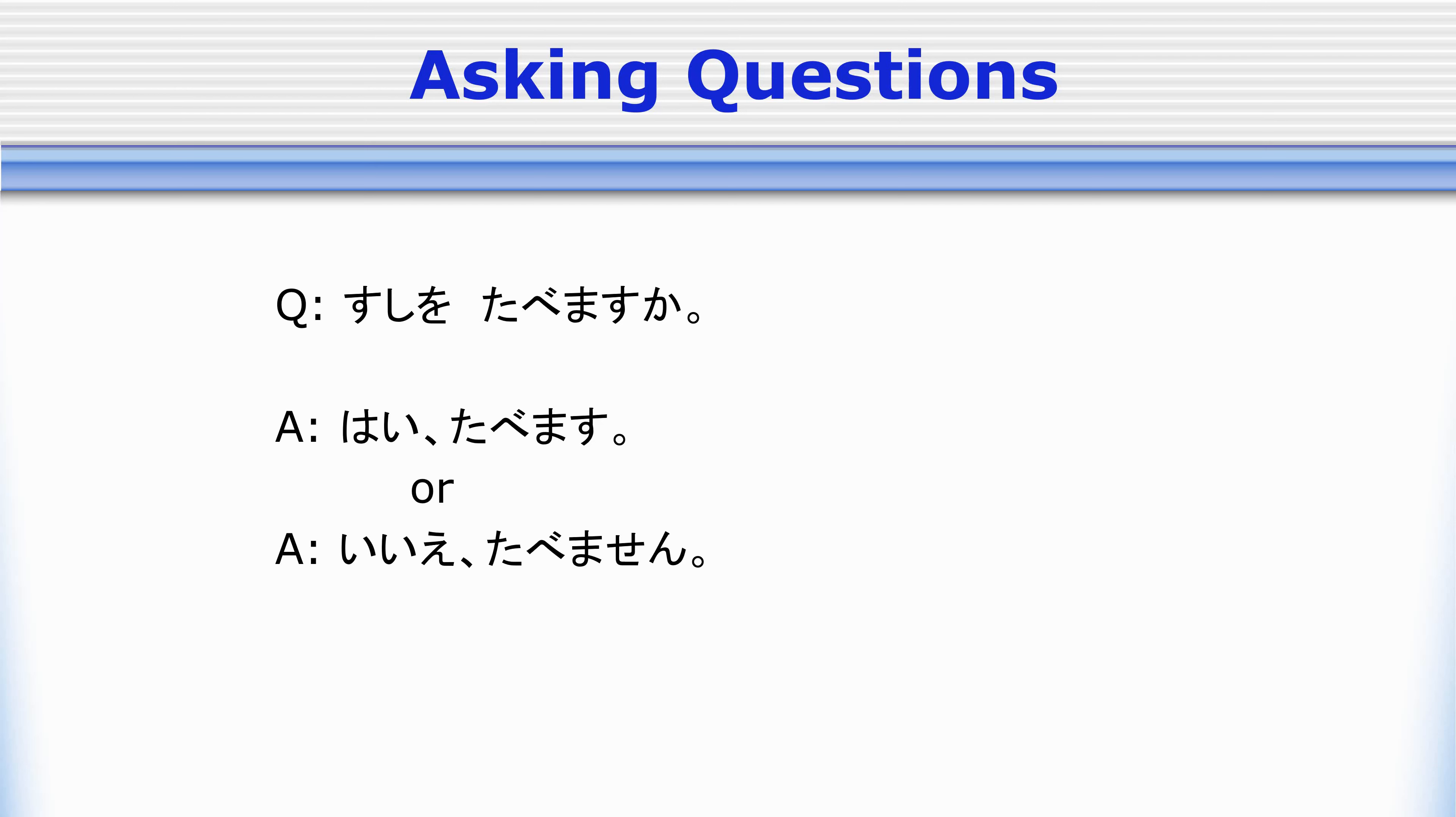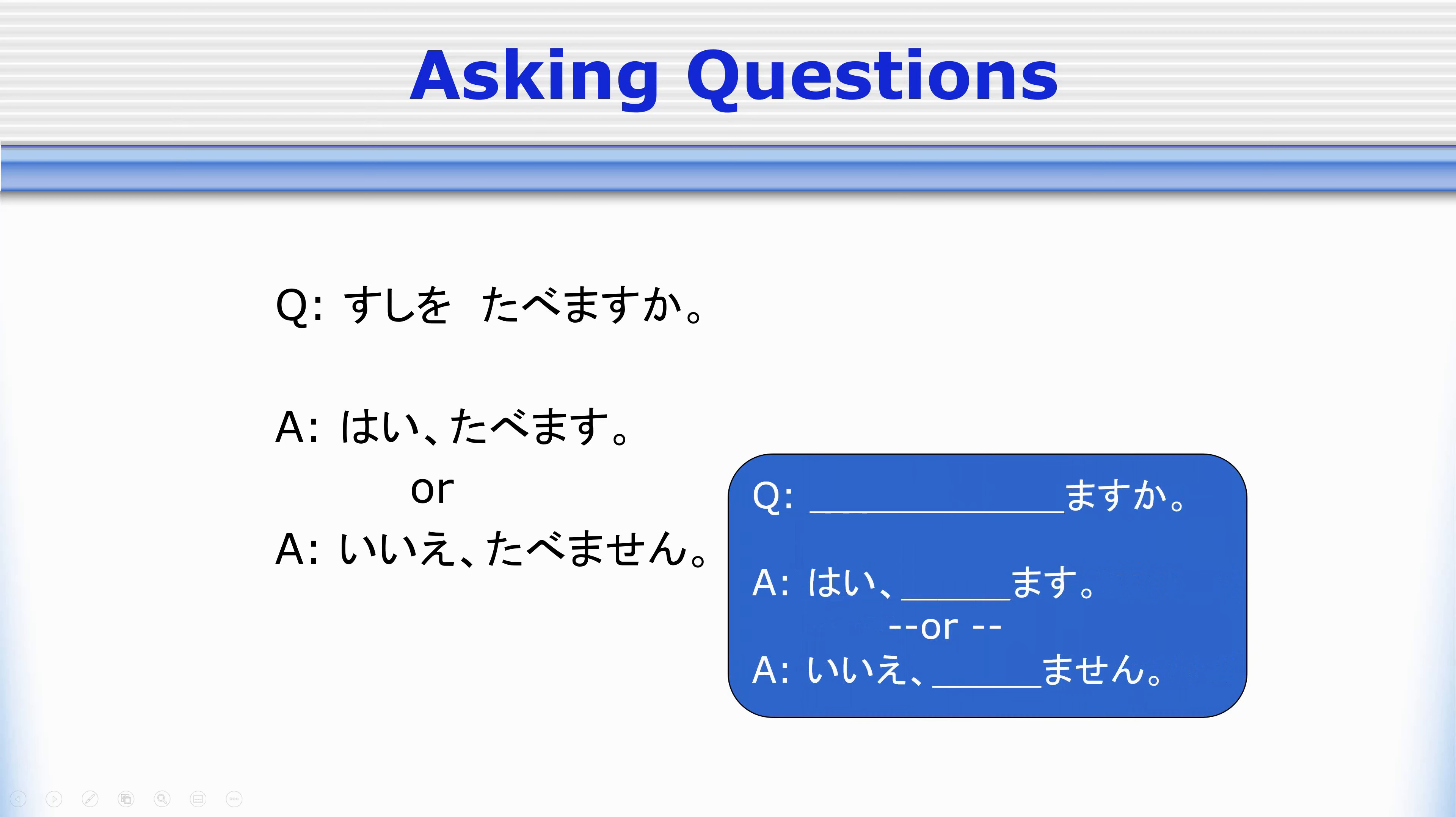Minasan, how about you? Sushi wo tabemasu ka? Either, hai tabemasu if you do eat sushi. Or, iie tabemasen if you don't. When we ask a question, we just have to ask the verb with ka and then we can answer with hai the masu form or iie the masen form.